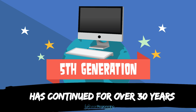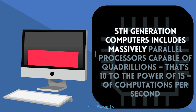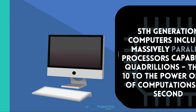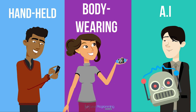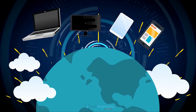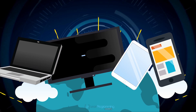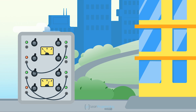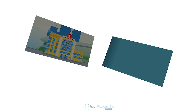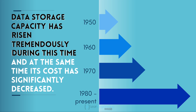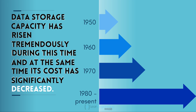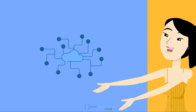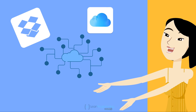The fifth generation has continued for over 30 years now and includes massively parallel processors capable of quadrillions — that's 10 to the power of 15 — of computations per second, handheld and body-wearing devices, artificial intelligence, virtual reality, and just about every other type of computer we see or hear about today. Many of these computers are now intentionally embedded within other devices such as automobiles, lighting systems in buildings, and even home refrigerators. Data storage capacity has risen tremendously while its cost has significantly decreased. Memory sticks or thumb drives have virtually replaced the floppy disk, and cloud storage is quite prominent with names like Dropbox, iCloud, OneDrive, and others.